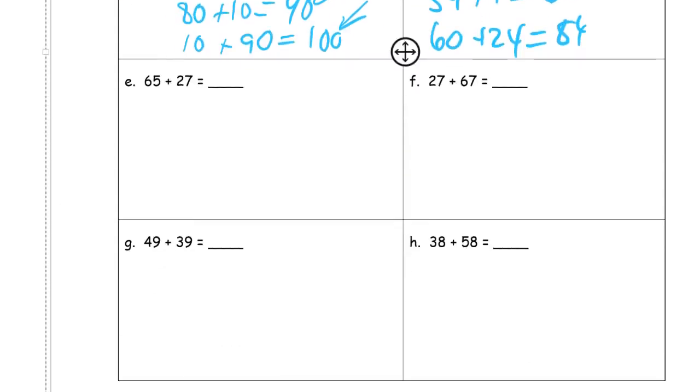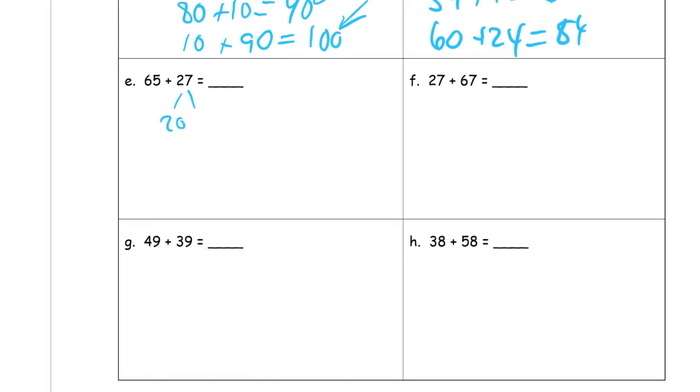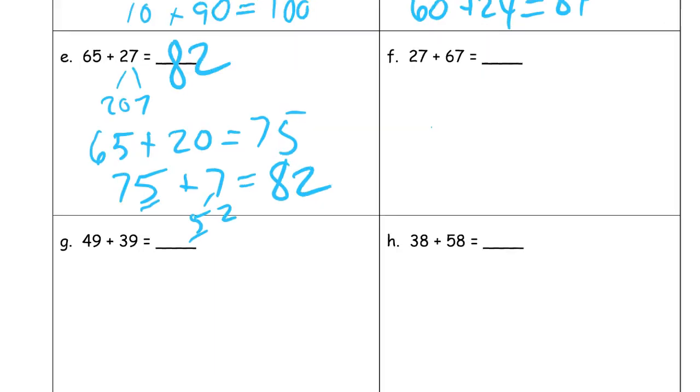65 plus 27. Now there's this 27 here and 65, and I'm just going to break up this 27 into 20 and 7. 65 plus 20 is 75, and 75 plus 7. The 7 I could think of as a 5 and a 2 because I'm thinking here's a 5. If I had another 5, I'd make 10 with it. That would make 80, and then 2 more would be 82. Or you could just count up from 75: 76, 77, 78, 79, 80, 81, and 82. And that's your 7 more for 82.